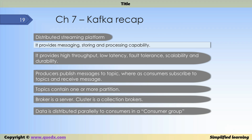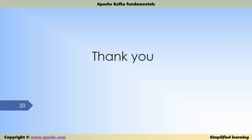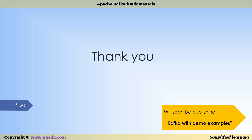Let's do a quick recap. Kafka provides a distributed streaming platform with capabilities for messaging, storing, and processing. It provides high throughput, low latency, fault tolerance, scalability, and durability. Producers publish messages to a topic, while consumers subscribe to topics and receive messages. Topics contain one or more partitions. A broker is a server, and a cluster is a collection of brokers. Data is distributed in parallel to consumers in a consumer group. Thanks for taking this course — if you have questions or comments, feel free to add them. Please subscribe to the channel for new courses. Happy learning from the CodeX team!